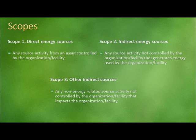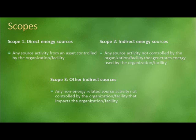The first, scope 1 emissions, deal with direct energy sources. These are any source activities from an asset controlled by the organization or facility. An example would be natural gas that is burned on site to produce heat. Scope 2 emissions are indirect energy sources — source activities that are not controlled by the organization or facility, but that generate energy that is used by that organization or facility. The most common example is electricity purchased from a local utility. Scope 3 emissions are basically other sources that do not fall under the first two categories. These are non-energy related source activities not controlled by the organization or facility, but that impact the organization in some way. Examples include employees commuting to and from work using their own personal vehicles or business travel on commercial airlines.